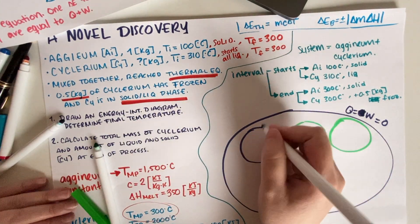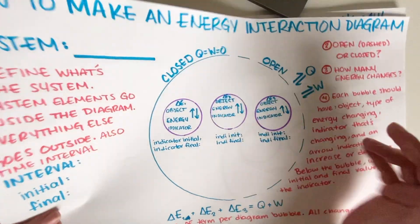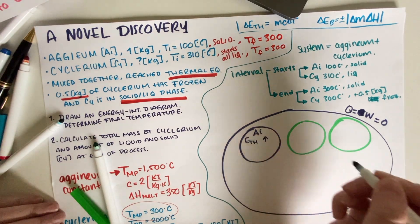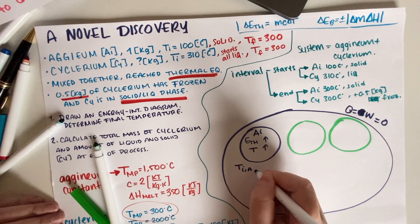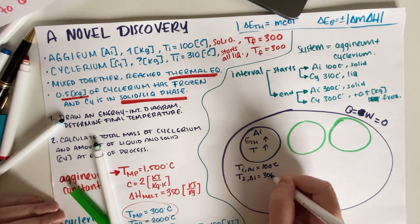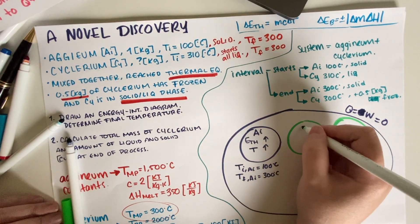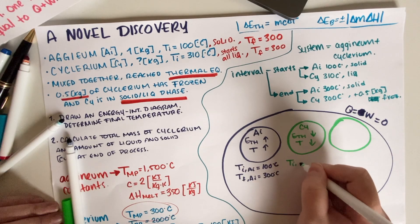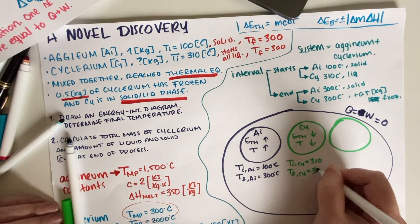For each bubble: object, type of energy, indicator, and an arrow. For aginium: it changed in E-thermal and it went up because temperature — the indicator — went up. The initial temperature for aginium was 100°C and the final temperature is 300°C, so the arrow points upward.